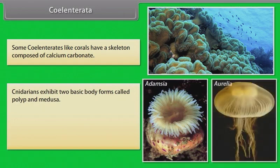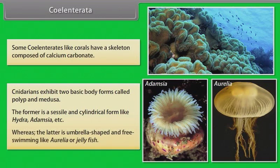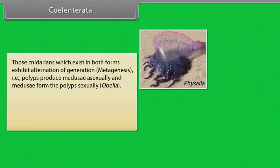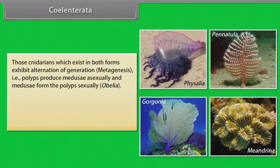Cnidarians exhibit two basic body forms: polyp and medusa. The polyp is a sessile and cylindrical form like hydra and adamsia, whereas the medusa is umbrella-shaped and free-swimming, like aurelia or jellyfish. Those cnidarians which exist in both forms exhibit alternation of generation, called metagenesis — polyps produce medusae asexually and medusae form polyps sexually. Example: Obelia.